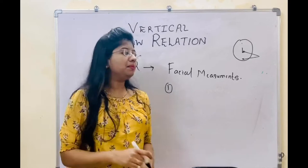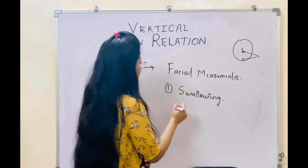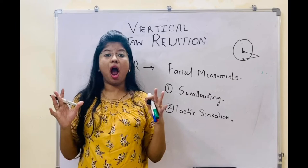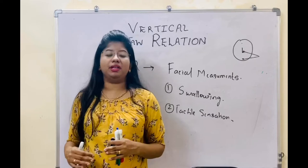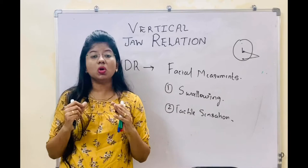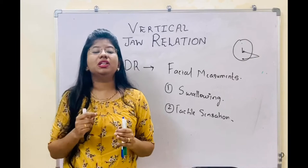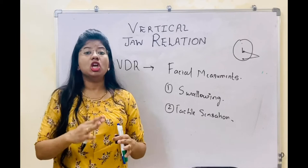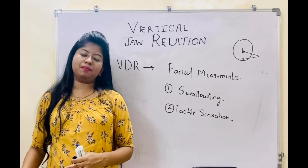The second method is tactile sensation. In this, we ask the patient to open wide and hold that wide opening for one or two minutes. After that, when it gets strained and the patient gets tired, we ask the patient to close until they feel comfortable, and then we record the measurements. The problem is that there is a patient perception involved in this, so there can be error in this method.